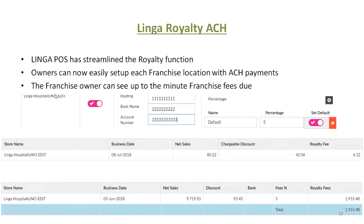Linga Royalty ACH. Linga has streamlined the royalty function. Owners can now easily set up each franchise location with ACH payments and the percentage that their franchise fees are due. The franchise owner can now see up-to-the-minute franchise fees based on individual location or the whole franchise, just as easily as they can view all the sales reports.